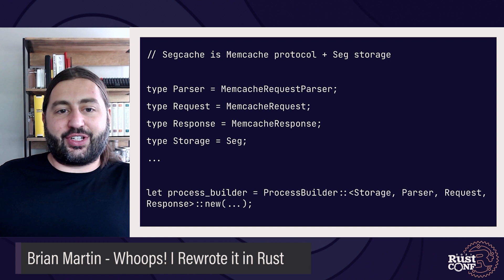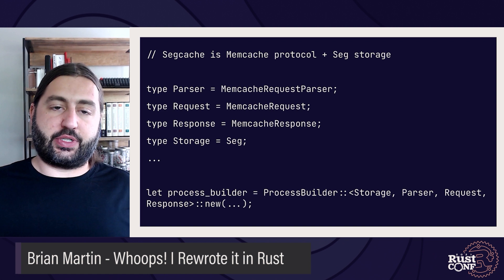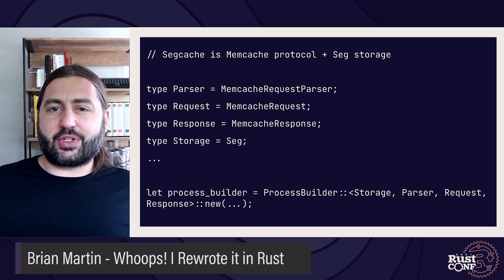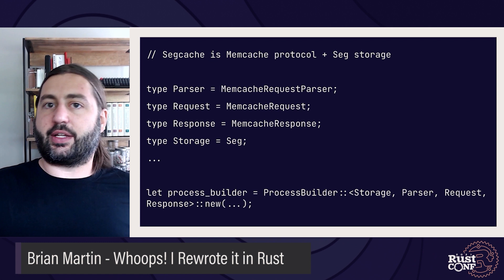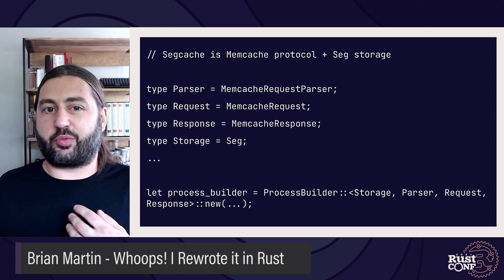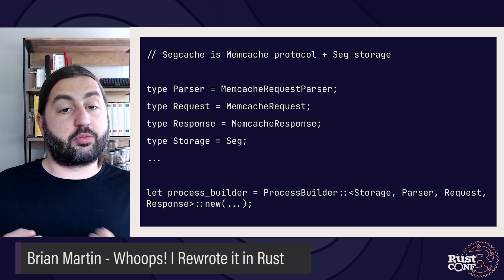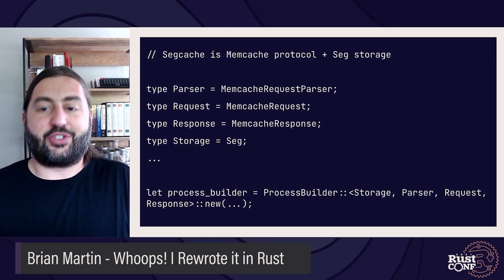Here I'm showing the benefit of zero-cost abstraction, traits, the type system, and generics in Rust. Segcache — the resulting cache server — is a combination of the Memcache protocol with segment-based storage, expressed in about 200 lines of code. The code between the ping server and segcache is very similar — they just differ in what storage engine and protocol they use. This shows the composability of these components and how we're able to neatly express that with traits and generics. When we write a new storage library or additional protocols, they'll be just as easy to compose together.